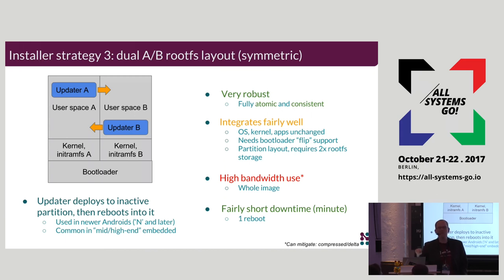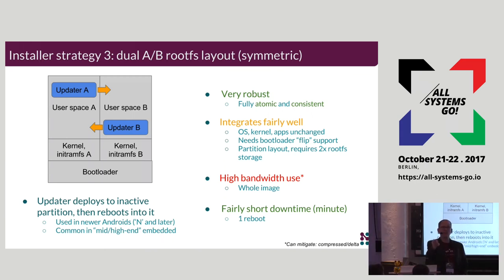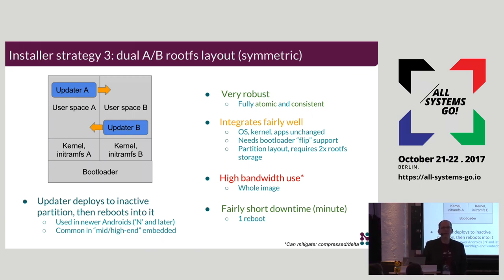If you decide that A and B are read-only root file systems, that makes delta calculations simpler because you can do them on the server based on the image you know was installed. Whereas if the A and B root file systems are read-write, you have to have some mechanism where the calculation is done on the device, since the data may have changed and you don't know what it is.